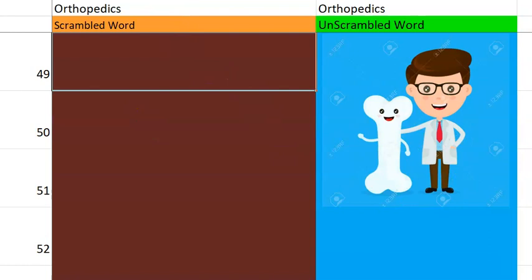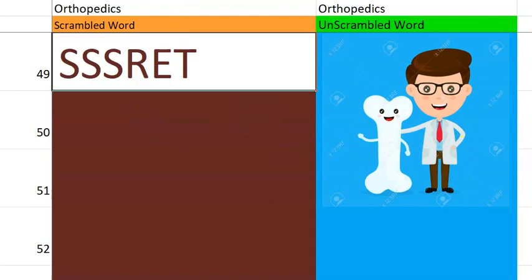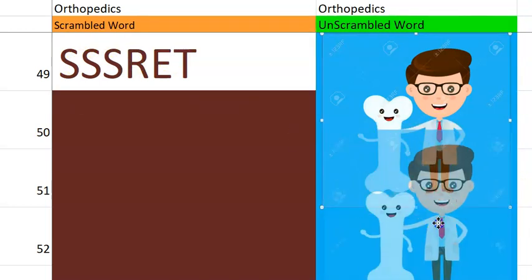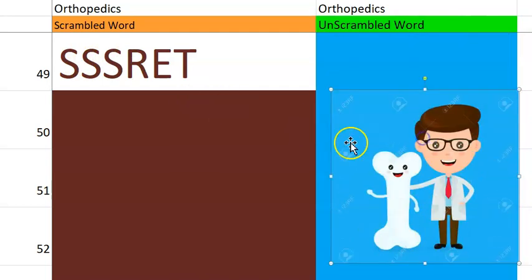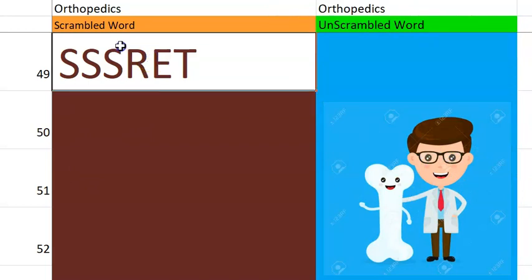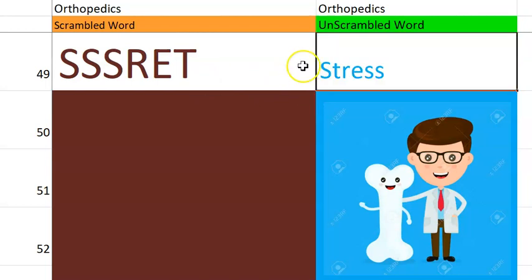Let's go to the 49th one — pathological fractures, etc. And there is yet another type of fracture where there is repeated stress on the bone which will cause the fracture, begins with S. Stress fracture. Very good.